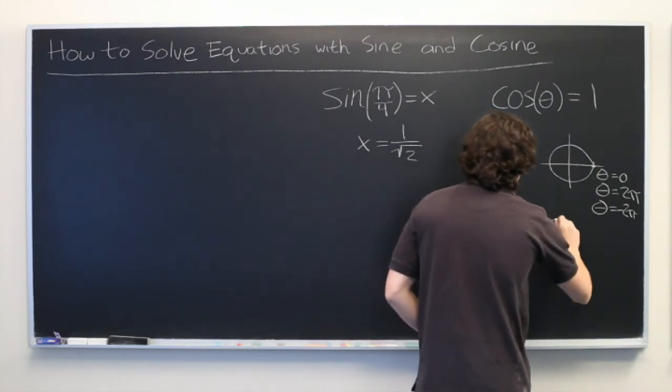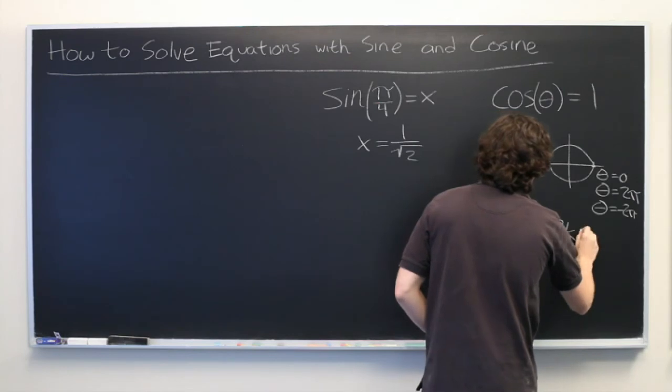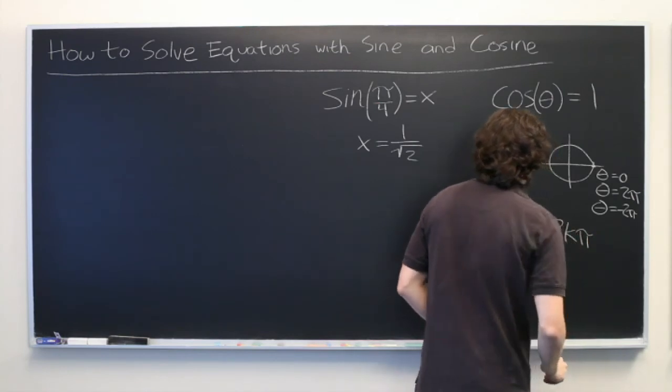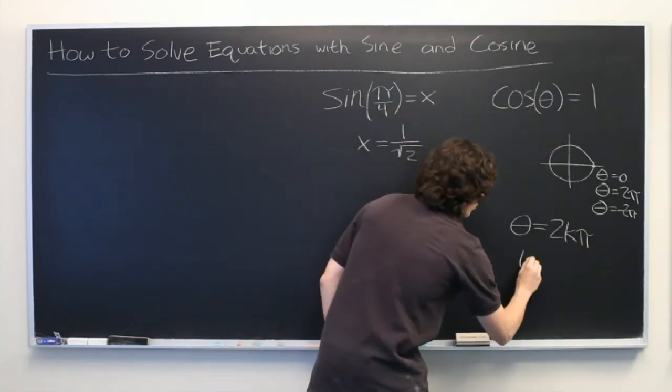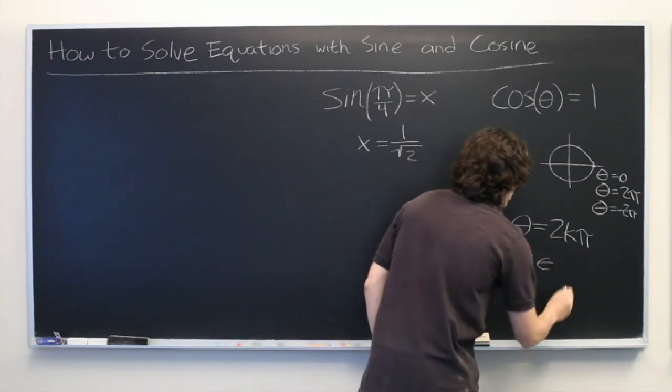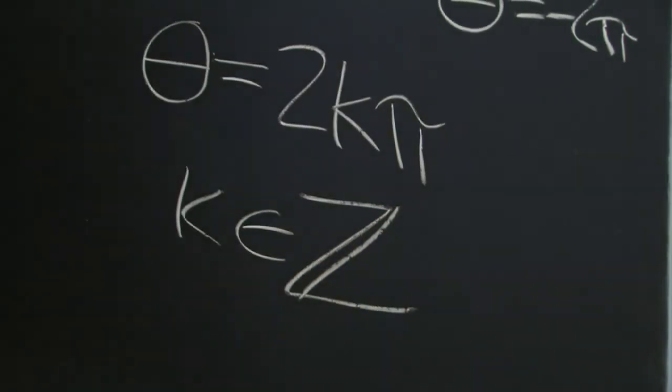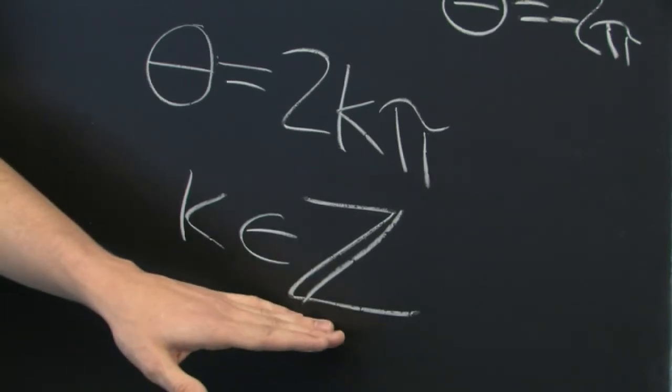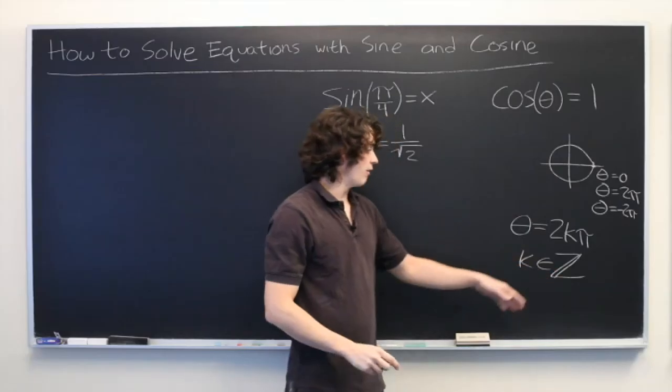Theta equals 2k times pi, where k is a member of the integers. Z is frequently used in mathematics to represent the set of all integers.